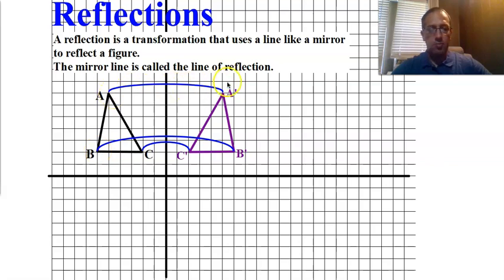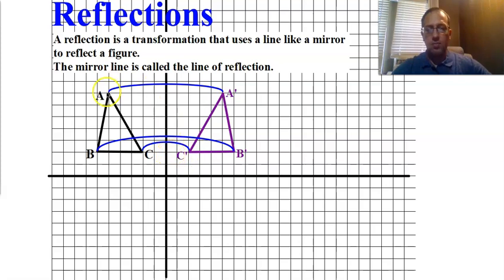Point A moves over here to A prime, B goes to B prime, C goes to C prime. One thing I want to point out: notice that the distance from C to our line of reflection is two units, and the distance from C prime to the line of reflection is also two units. Same thing is true for A — A is five units from the line of reflection, and A prime is five units on the other side of the line of reflection.